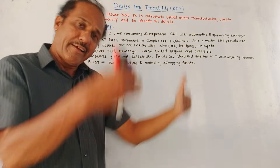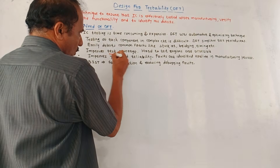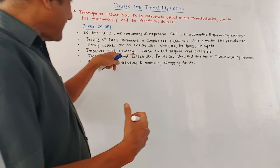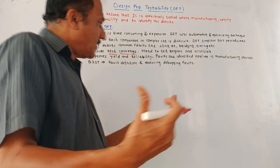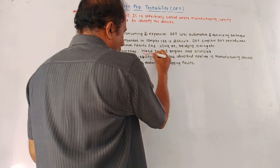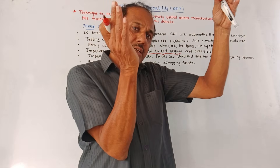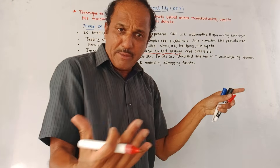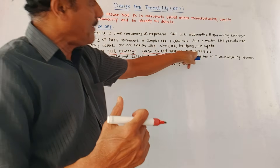DFT improves test coverage. Test coverage is the percentage of faults that can be detected during the testing process. DFT improves test coverage compared to traditional methods, so test coverage is larger. There are also certain regions called hard-to-test regions. Using a traditional method, if you want to insert a probe, there are certain regions on the PCB that are hard to test. But since this technique makes use of certain innovative tools, hard-to-test regions can be easily accessible.